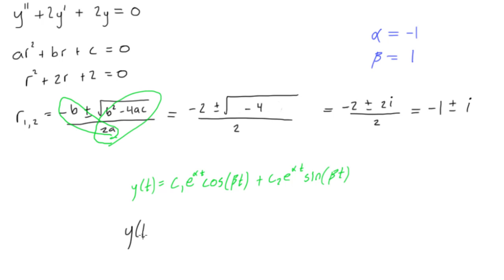So we have y of t is going to be equal to c1e to the alpha t, alpha is negative 1, so negative t cos of beta t. Well, beta is equal to 1, so we don't have to write that there, so we can say t, or we can say 1t if we want, but that's just redundant.